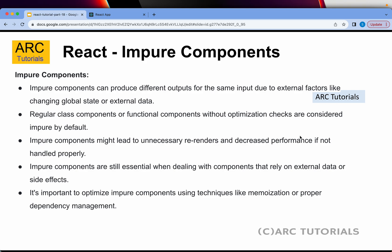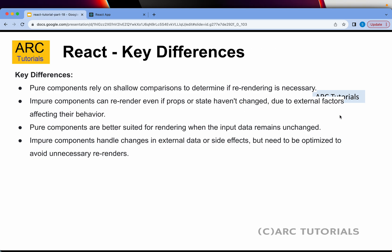Key differences: pure components rely on shallow comparisons to determine if re-rendering is necessary, while impure components can re-render even if props or state haven't changed due to external factors. Pure components are better suited when input data remains unchanged; impure components handle changes in external data or side effects but need optimization to avoid unnecessary re-renders.